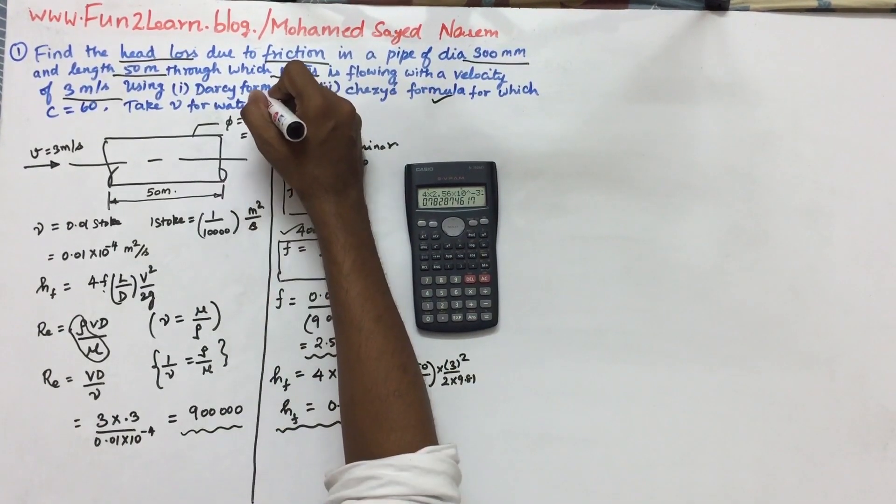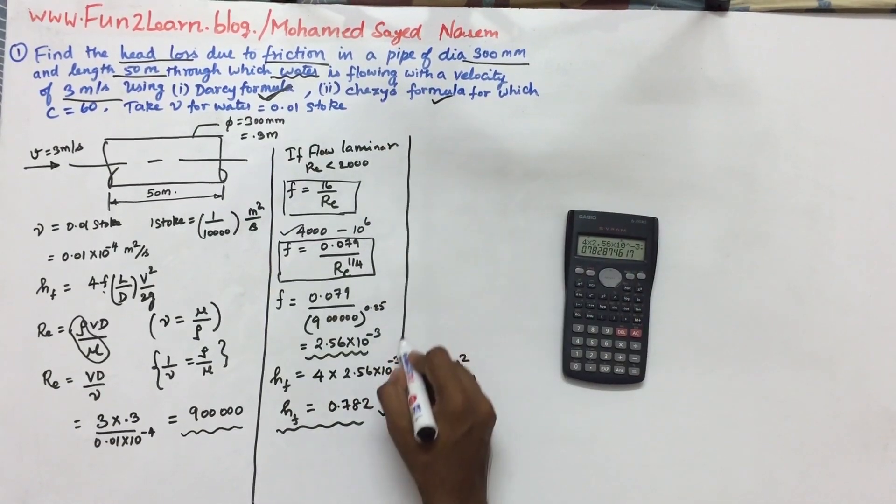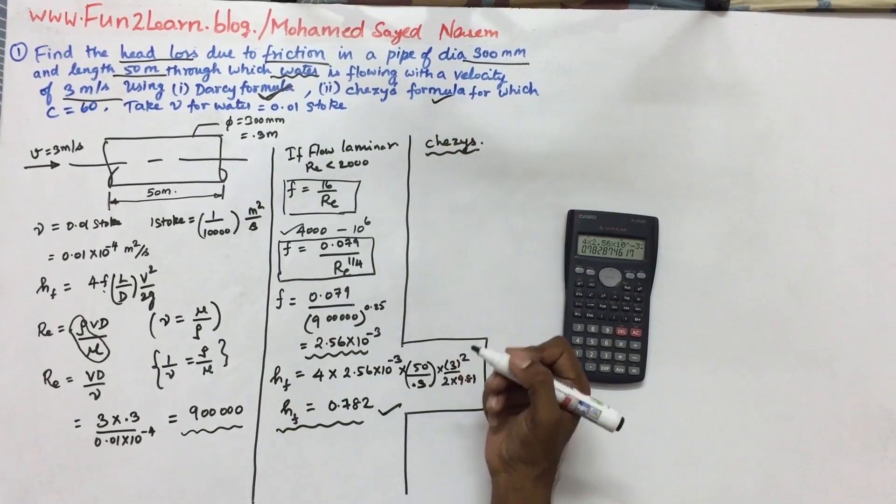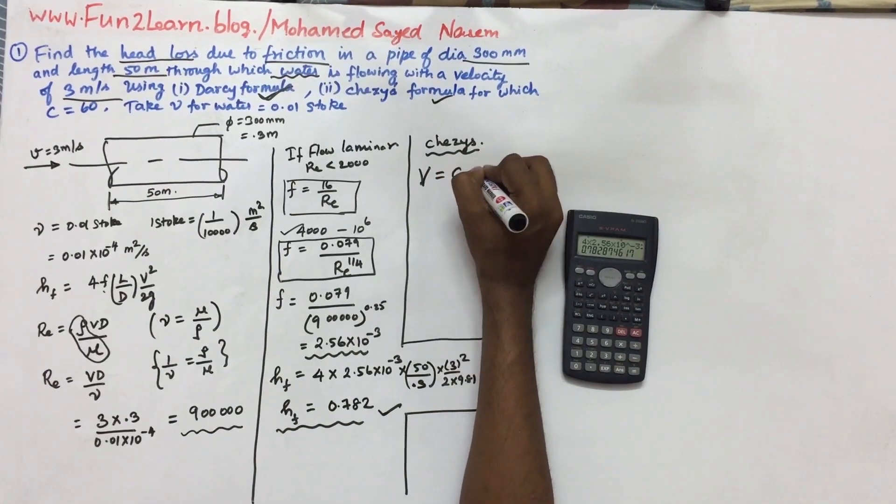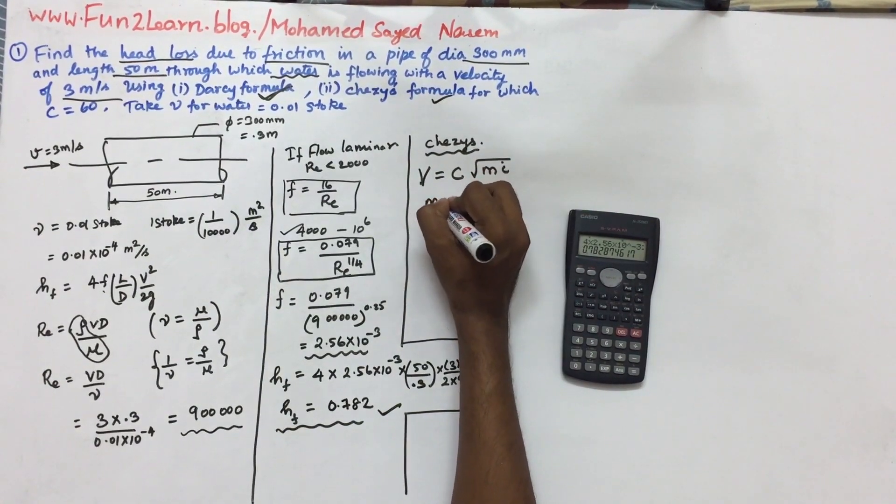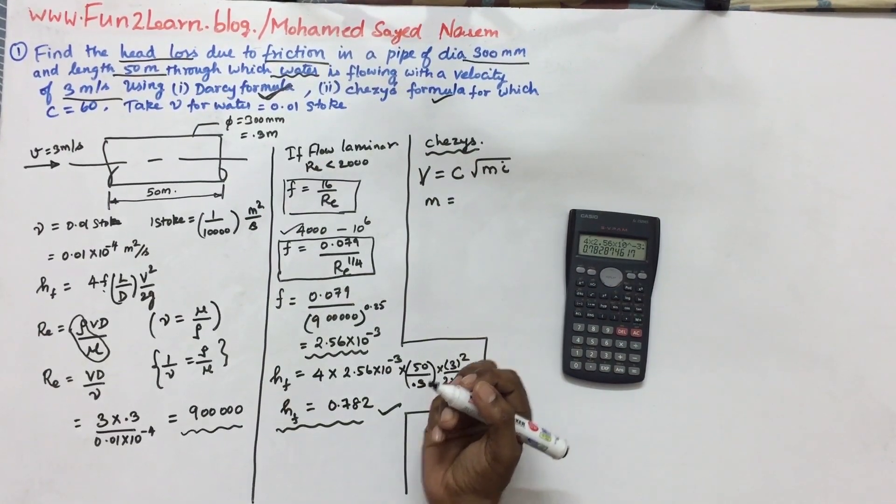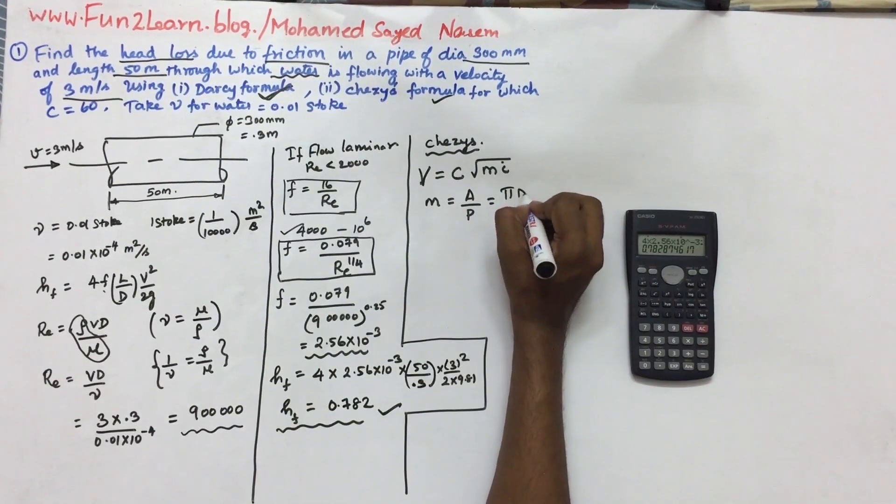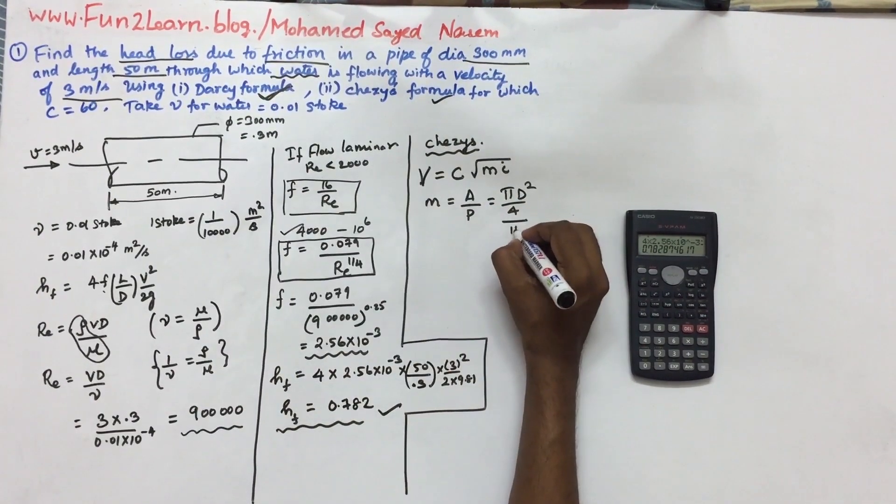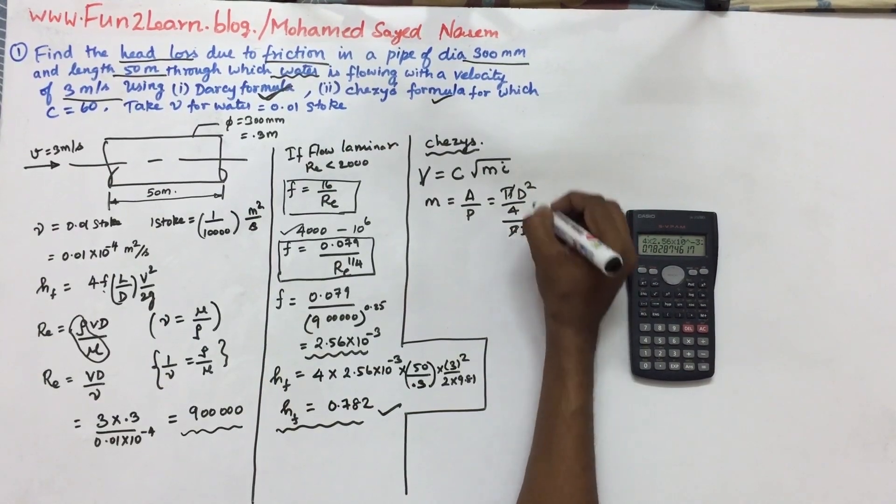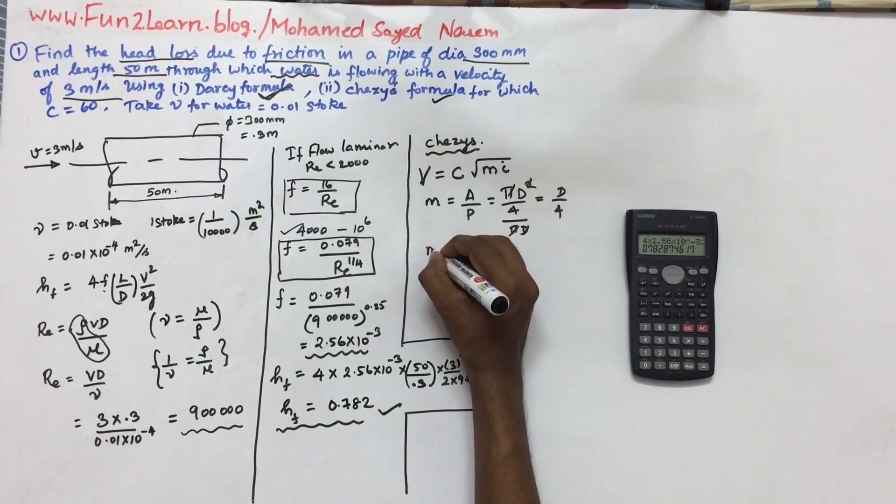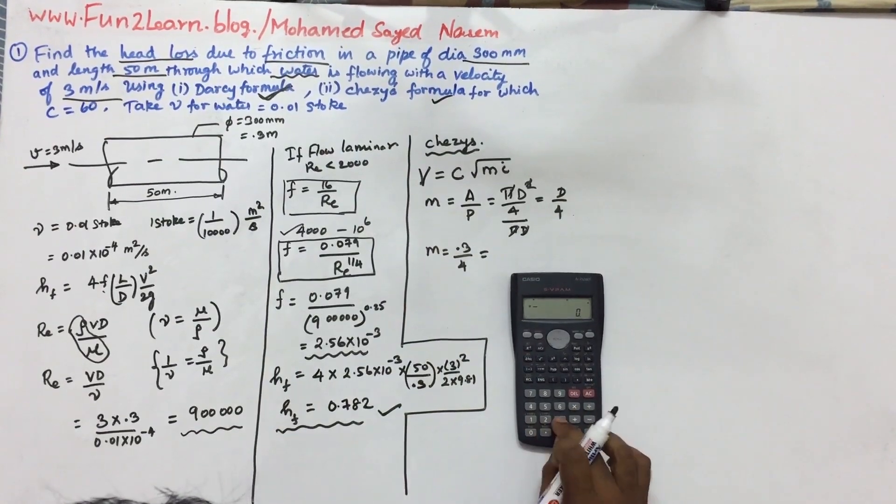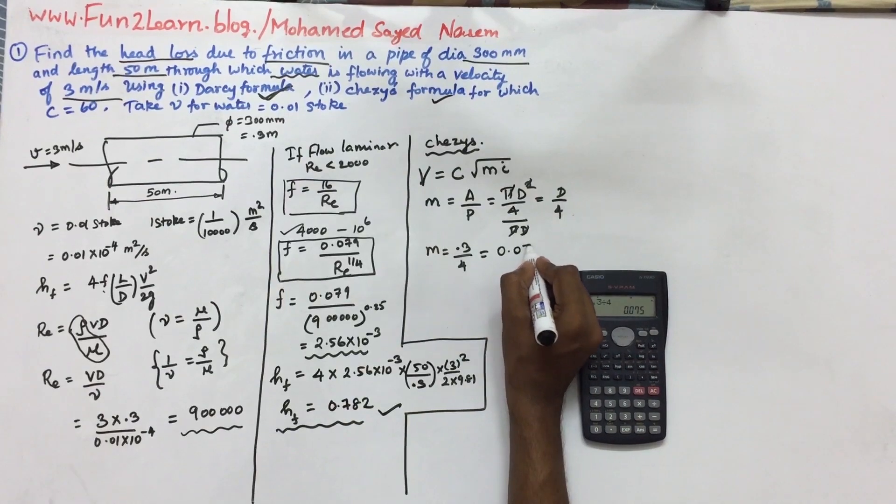Using Chezy's formula: velocity equals C, the Chezy constant, root of m i. m is hydraulic mean depth, which is the ratio of area by perimeter. Area of the cross section is pi d squared by 4. Perimeter is pi d. So m equals d by 4, which is 0.3 divided by 4, equals 0.075 m.